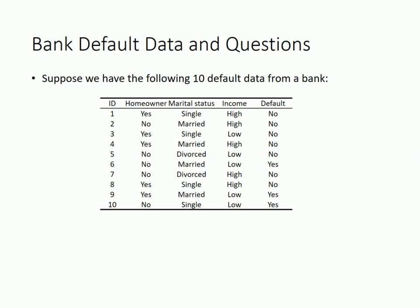For example, a bank gives loans to 10 clients. It collects some data about those clients, including whether the client is a homeowner, the client's marital status, and the client's income level. It also knows whether the client defaults on the loan or not.